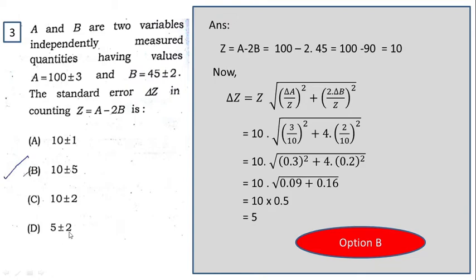Let's find the del Z term. So del Z equal to Z root over of del A divided by Z whole square plus 2 into del B divided by Z whole square. 2 comes from this term. Z we have already found out, which is 10, and del A, this is the error term 3, and del B, this is the error term plus minus 2. After doing this calculation, we arrive at the result which is 5. So option B is correct here.